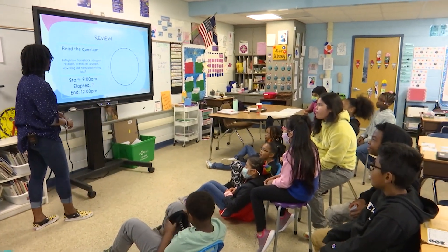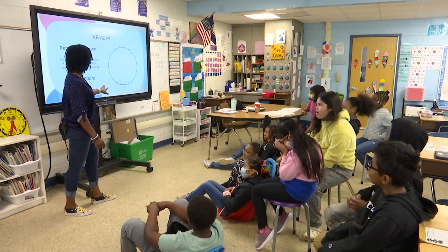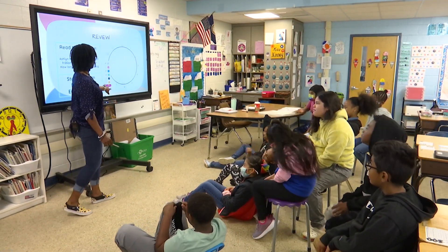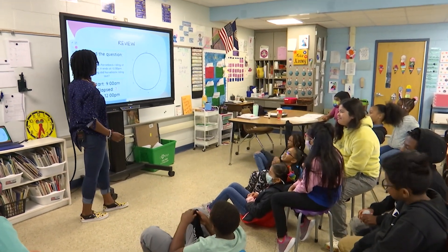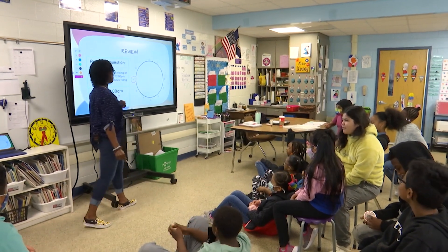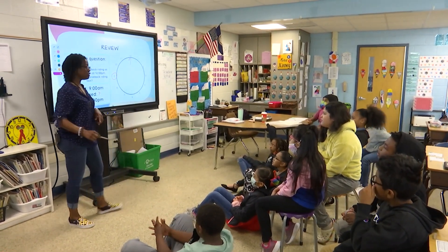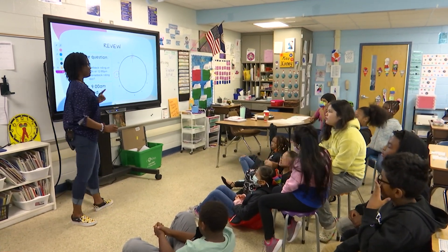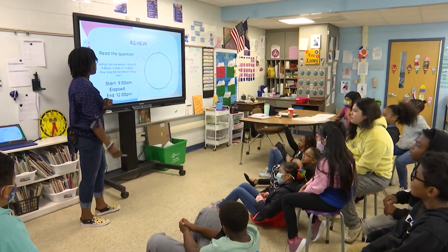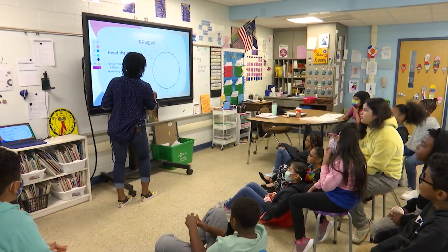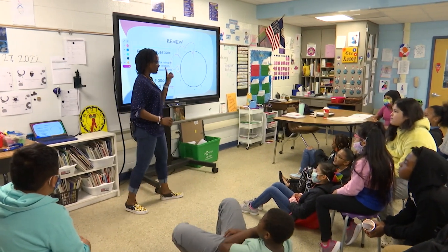Do we remember how to do our start-elapsed-end? You have to set it up on your paper and draw your circle. Ashlyn's horseback riding starts at nine o'clock, so I circle by nine. Then to get to 12, we count our hops — one, two, three. Three hops, so the elapsed time is three hours.